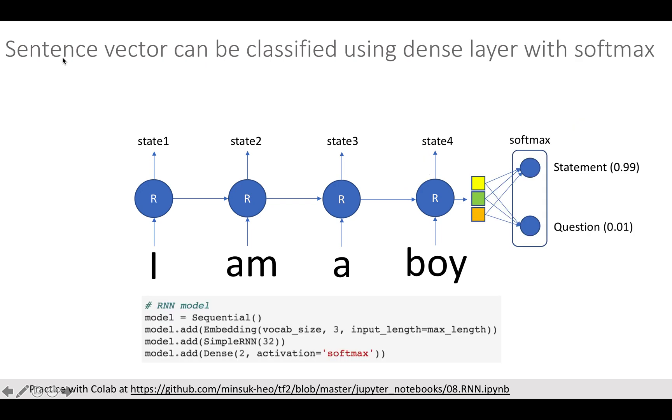As you have seen, the vector has been generated with sequence of inputs. Since the output is a vector, we can use the dense layer with softmax to classify this sentence into statement or question class. You can see very simple four lines of TensorFlow code for implementing sentence classification. As always, you can practice with Colab by going to my GitHub link at the bottom of this slide or in the description field.